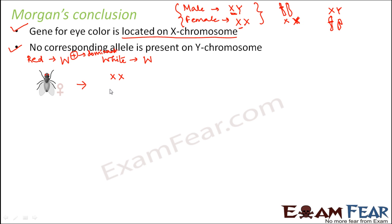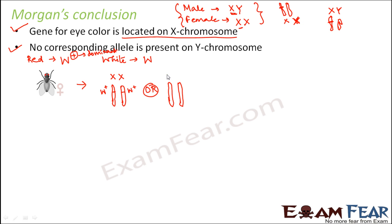For a female Drosophila, the sex chromosomes are XX. A red-eyed female can be homozygous — having w+ on both X chromosomes (X^w+ X^w+) — or heterozygous — having w+ on one chromosome and w on the other (X^w+ X^w). In the heterozygous case, the phenotype is still red-eyed because w+ is dominant over w.